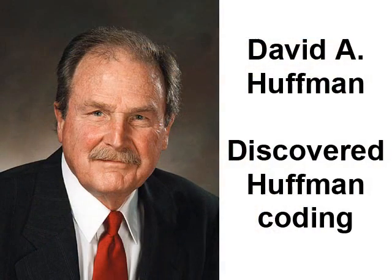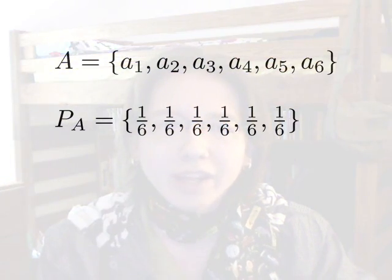This is better than every code word having the same length regardless of frequency. And there's a method we can use to create an improved set of code words for symbols — it's called Huffman coding. Although it works better for information sources with symbols that have unequal probabilities, it will still work for an information source with equally probable symbols, like a fair die. And this is what I'll be using for the first demonstration of Huffman coding.